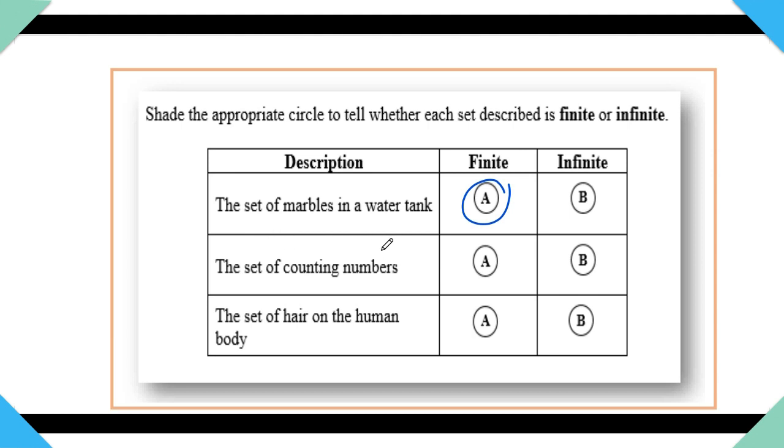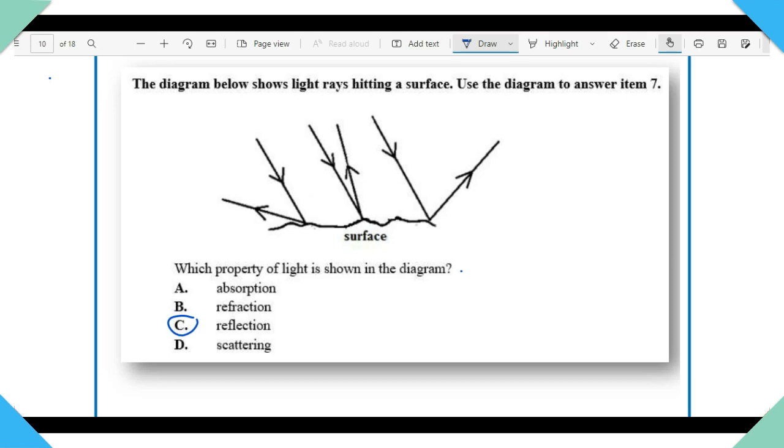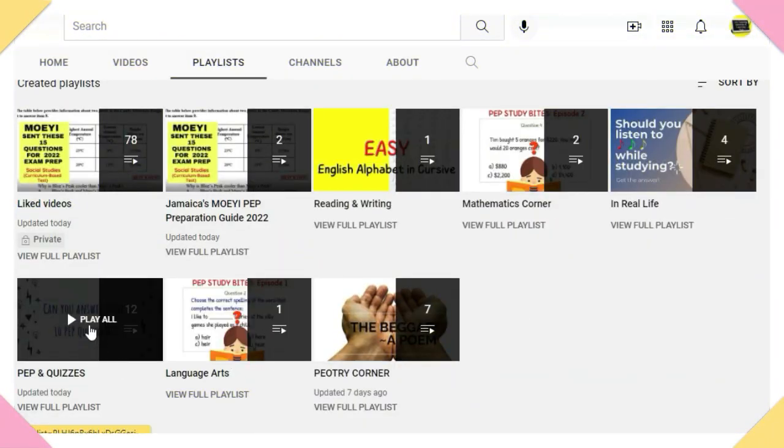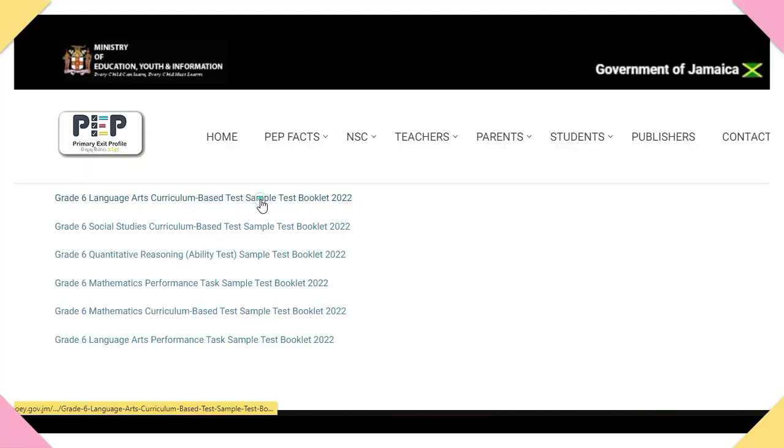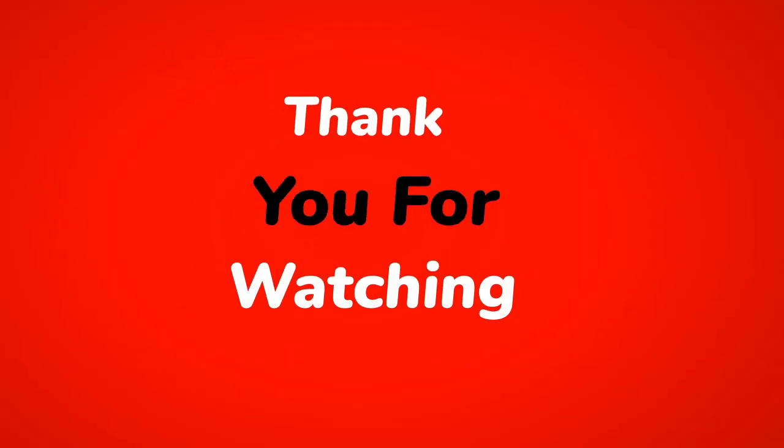The set of counting numbers. You know that this has no limit. This is infinite because you can count from now till forever and still keep counting. What about the set of hair on the human body? This is finite. It's a lot, but it's finite. There we have it. I'm so happy that we went through all of our 2022 papers. Make sure that you check out the other subject areas that have already been posted. Math was our last paper. Check out the playlists that are already on this channel. Check the link in the description to get more resources. All the best, guys. And make sure you come back.